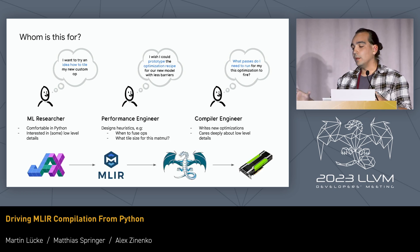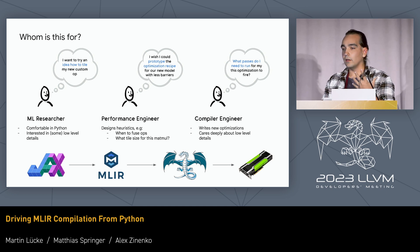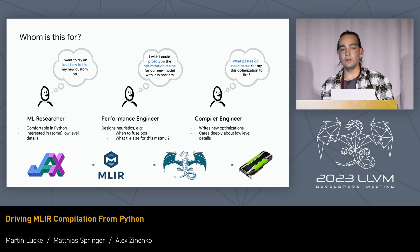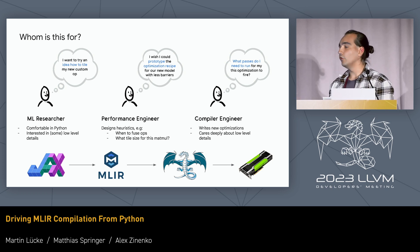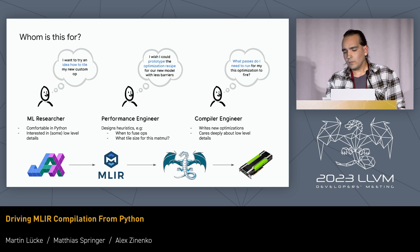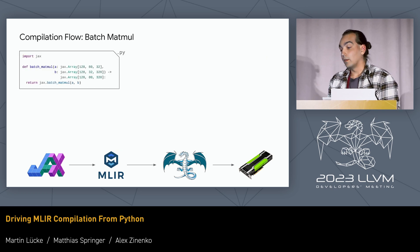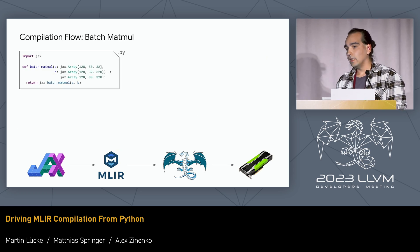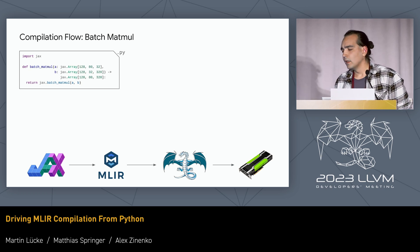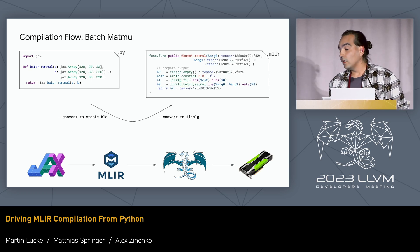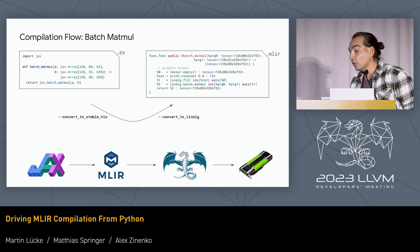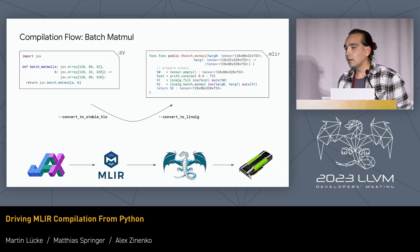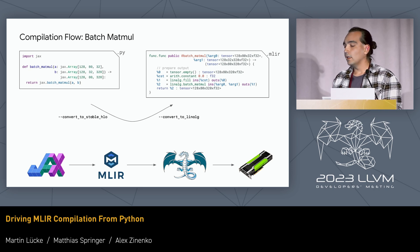The flow that all of these people might share is: you express your computation — ML or general purpose — in JAX, lower through MLIR and LLVM, and then go to GPU. So let's look at an example. We have a batch matmul expressed in JAX — it's just JAX.batch_matmul, pretty straightforward. And then we go to MLIR, convert to StableHLO, convert to Linalg. We have just the Linalg batch matmul with a fill to the output. It's pretty straightforward.